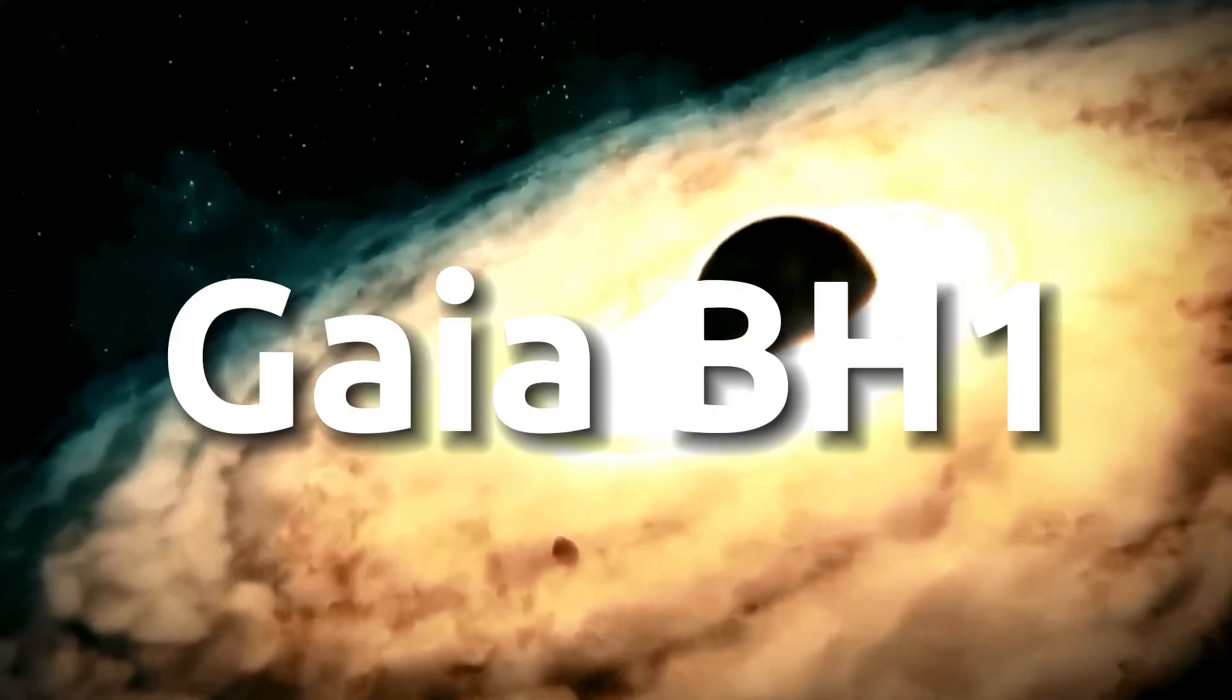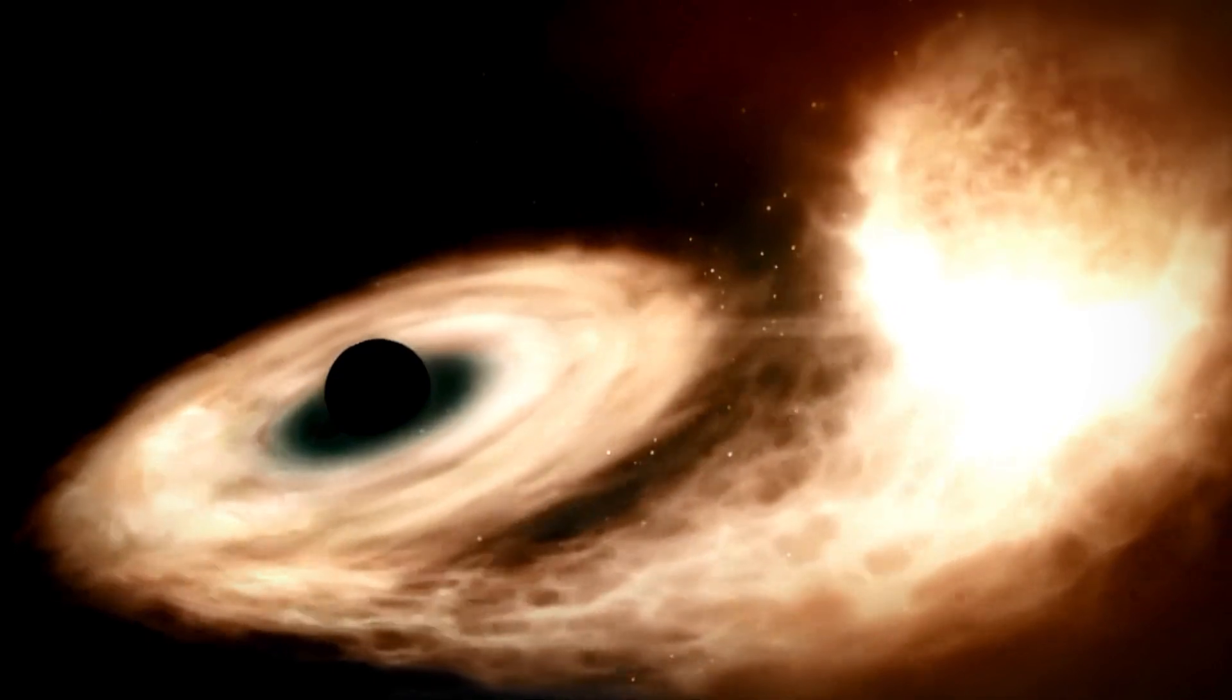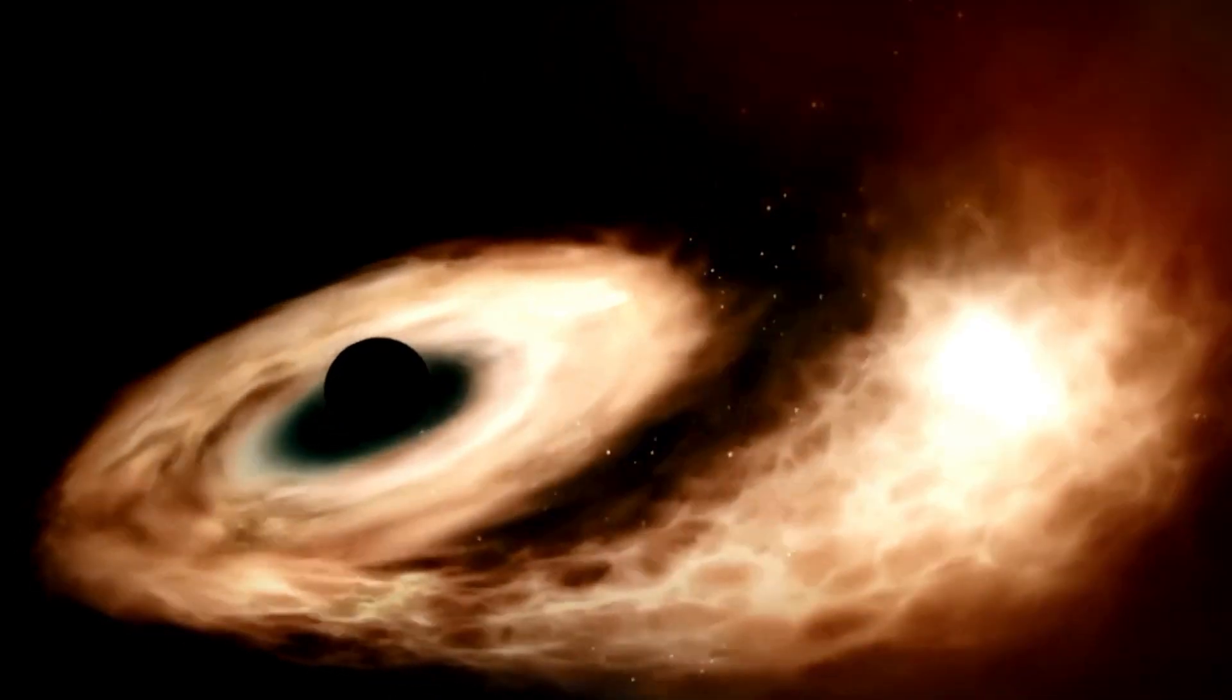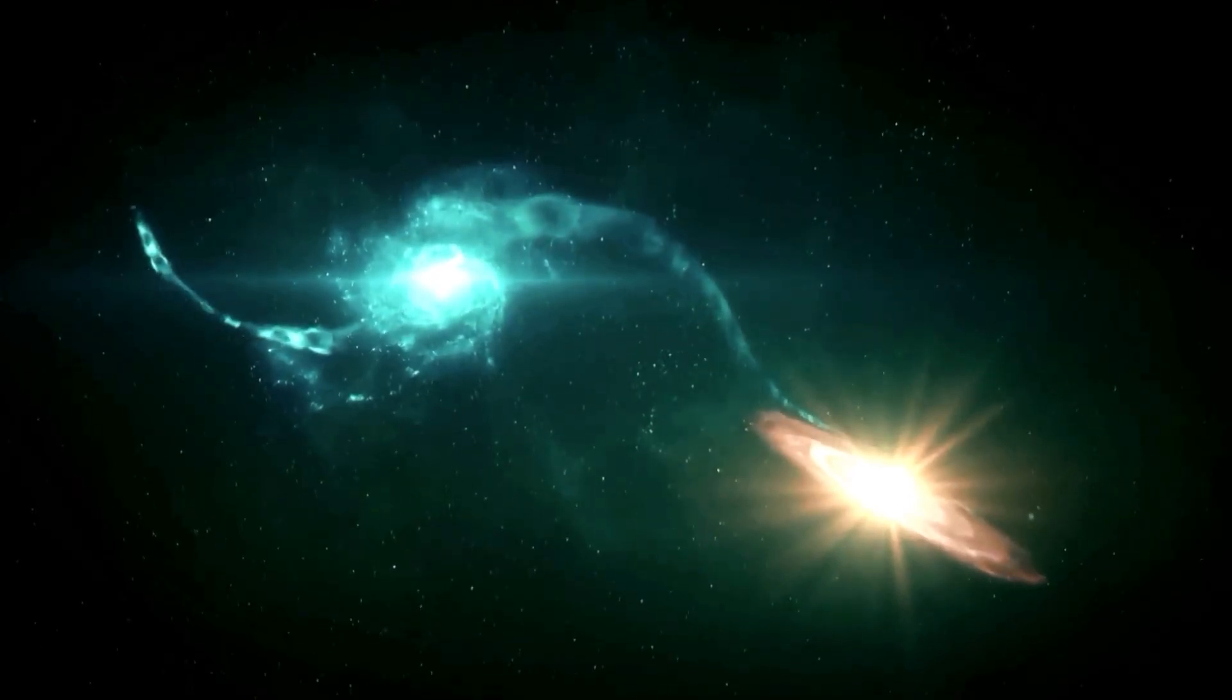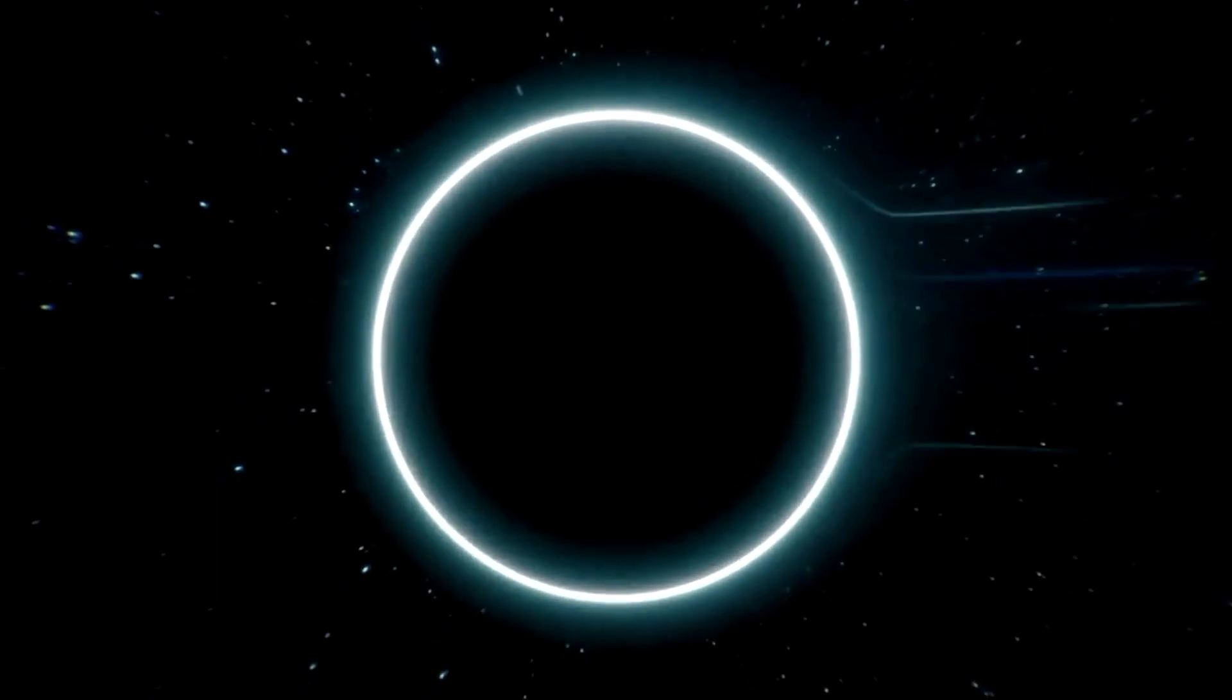It's called Gaia BH1 and is a monstrous object nearly 10 times as massive as the Sun. Its sun-like stellar companion led to its discovery, but how it formed remains a mystery.